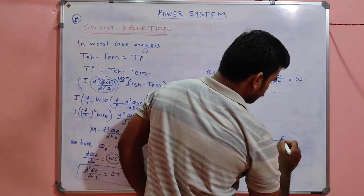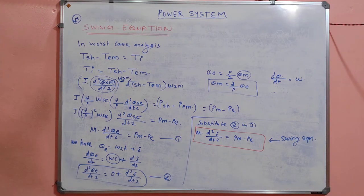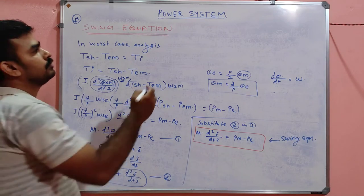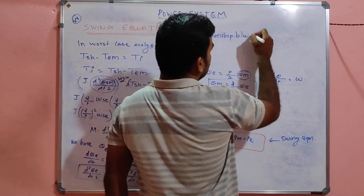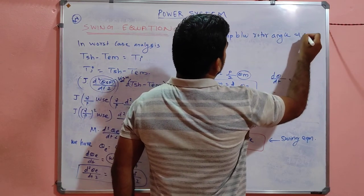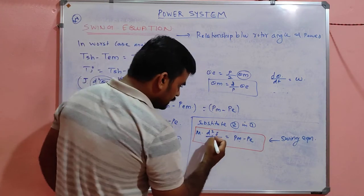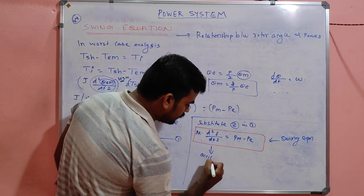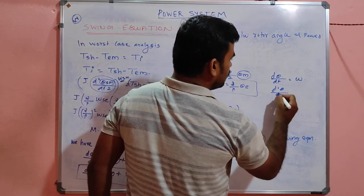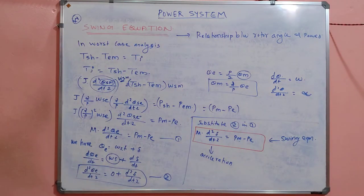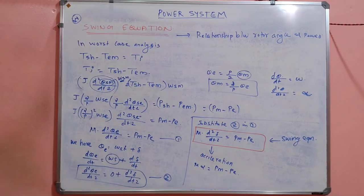This is called the swing equation, and it can be directly asked in the examination. The swing equation is the relationship between rotor angle and power: M × d²δ/dt² = P_M minus P. Here, d²δ/dt² is acceleration α. So the equation can also be written as M × α = P_M minus P.